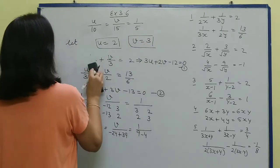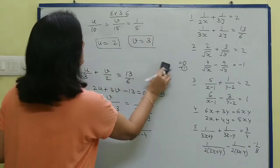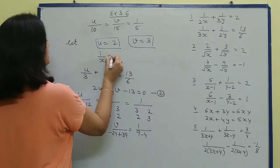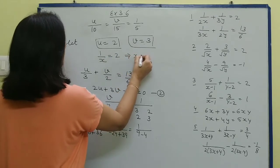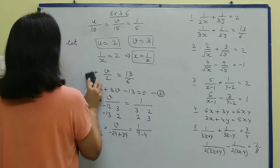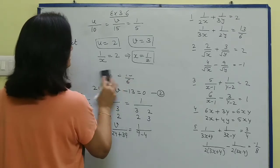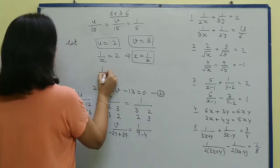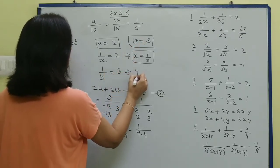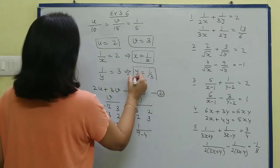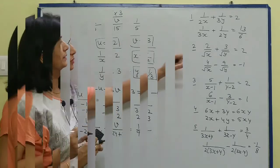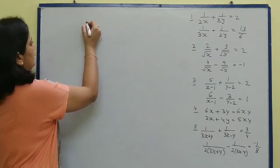We had assumed u = 1 upon x, so 1 upon x = 2, giving x = 1 upon 2. Similarly, v = 1 upon y, and v = 3, so y = 1 upon 3. These are our answers. Now let's look at the next question.